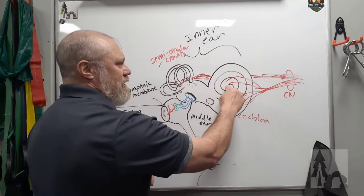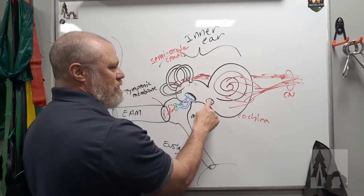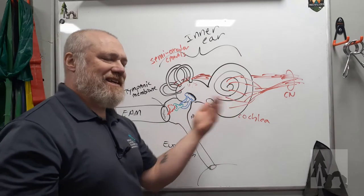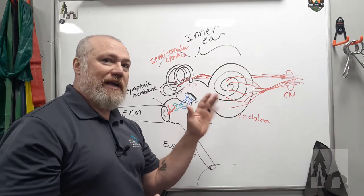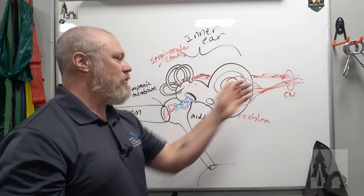At the end of the cochlea, like at the snail shell that was rolled up, there's a round window that acts as a dampener on the end of those fluid waves, so they don't slosh back through the cochlea.